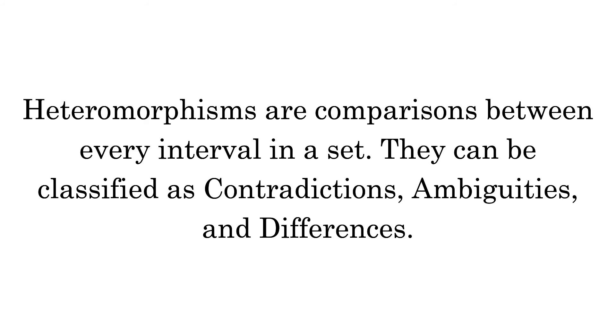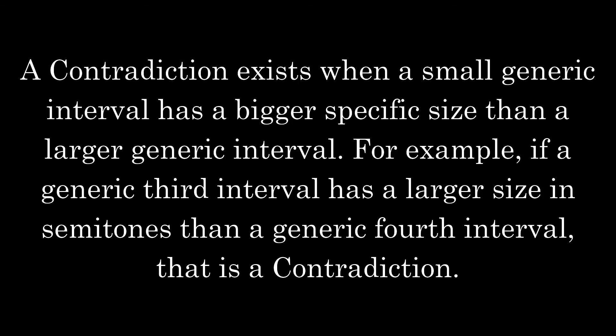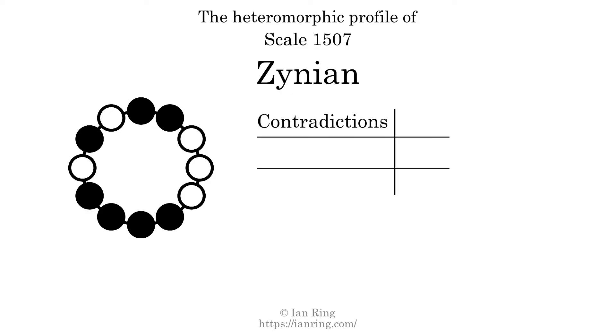Heteromorphisms are comparisons between every interval in a set. They can be classified as contradictions, ambiguities, and differences. A contradiction exists when a small generic interval has a bigger specific size than a larger generic interval. For example, if a generic 3rd interval has a larger size in semitones than a generic 4th interval, that is a contradiction. The number of contradictions in this scale is 25.